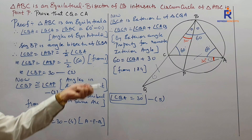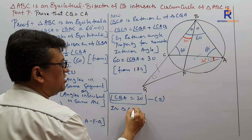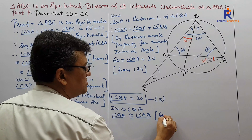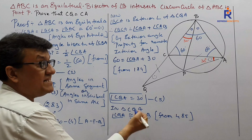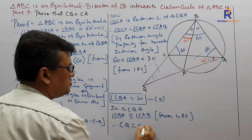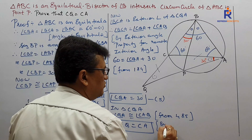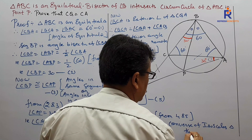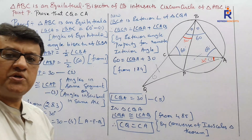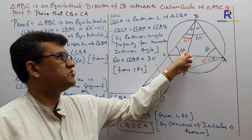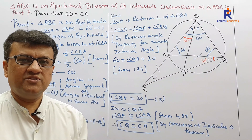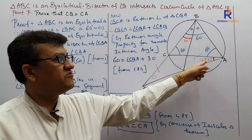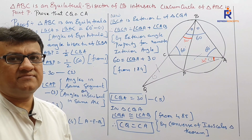From equations four and five, angle CQA is congruent to angle CAQ. Therefore, in triangle CQA, by the converse of the isosceles triangle theorem, CQ equals CA. This completes the proof. The key technique used here is 'shifting to prove' — identifying that proving the base angles congruent leads directly to the final result.